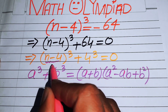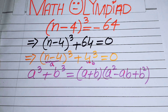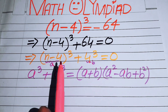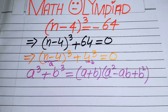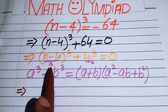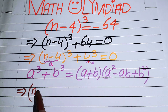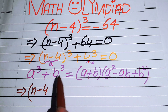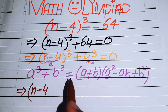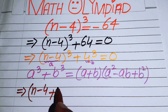If you focus on our equation, (n - 4) is the value of a and 4 is the value of b. Now we just put the values of a and b into this formula. We obtain (n - 4 + 4), where (n - 4) is the value of a and 4 is the value of b.